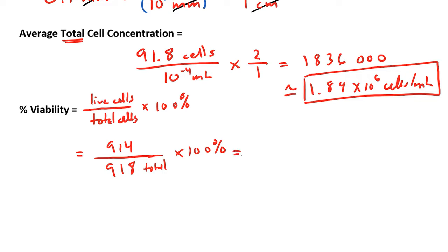Do the math now. And we get 99.564, 2, 7, 0, 1, 5. We're going to round that off to three significant digits. 99.6% viability. This tells us that 99.6% of the cells in our sample were live.